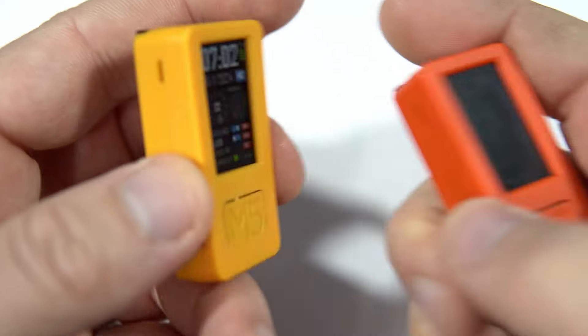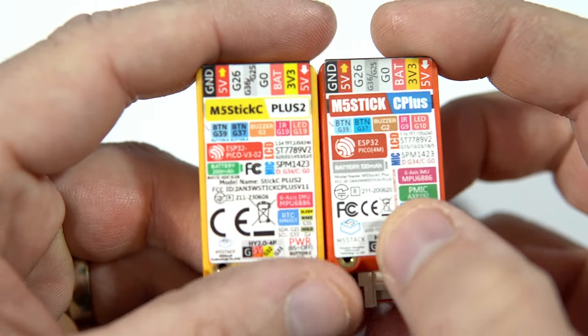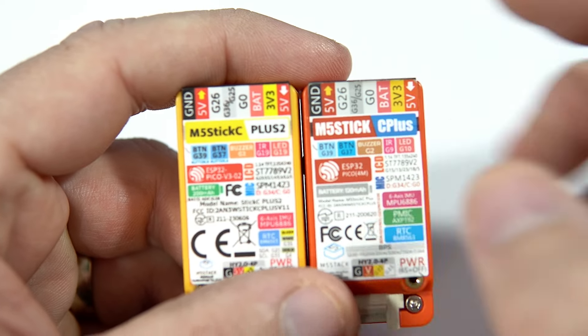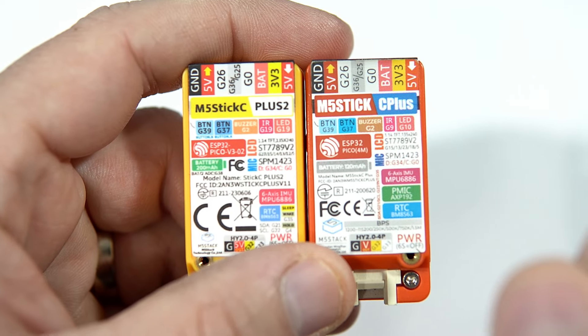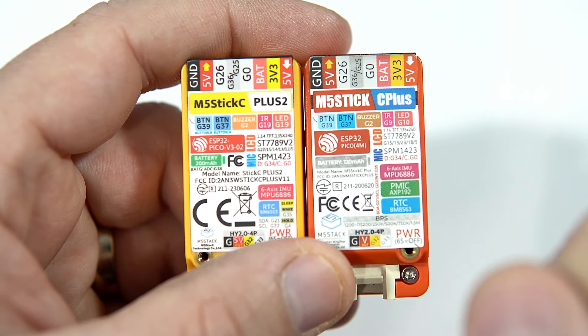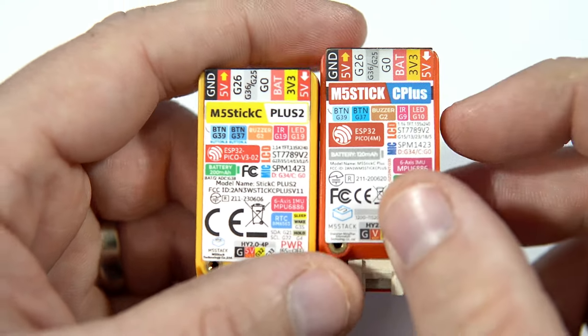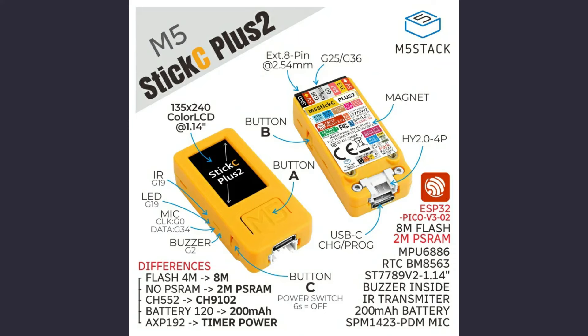There is also a different version of ESP32. The version in the new M5 Stick C+ 2 is the ESP32 Pico V3. Also, instead of 4 MB, now we have 8 MB of flash memory, and now we also have 2 MB of PSRAM. There is also a difference in the power management chip and a different USB communication IC.